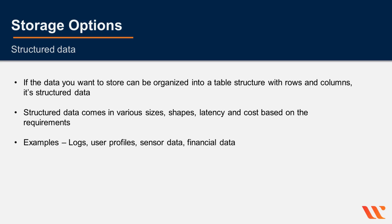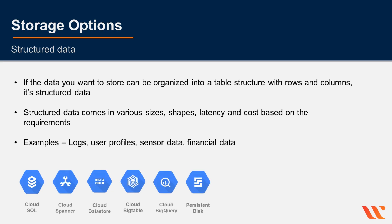If the data can be organized into a table structure — that is, in rows and columns — it's structured data. These come in different sizes, shapes, latency, and cost. Examples include event logs, user profiles, sensor data, and financial data. Structured data can be stored in Cloud SQL, Cloud Spanner, Datastore, Bigtable, BigQuery, and Persistent Disk — six out of the eight storage products that Google Cloud Platform offers.